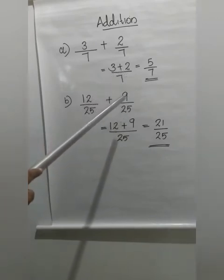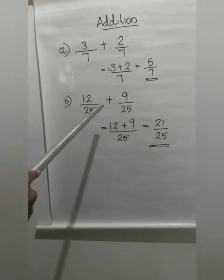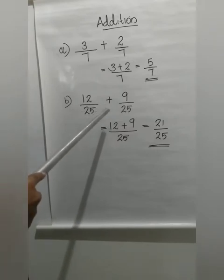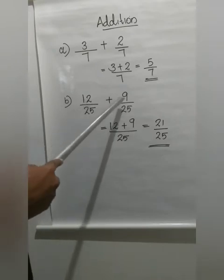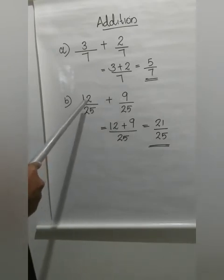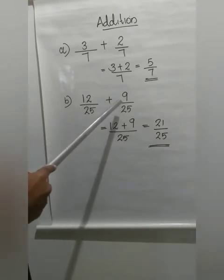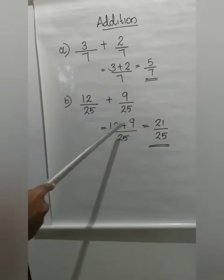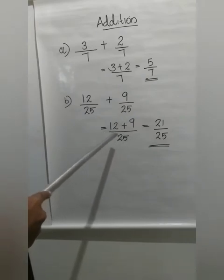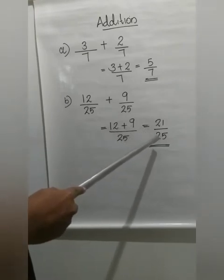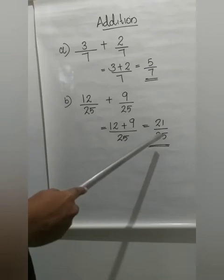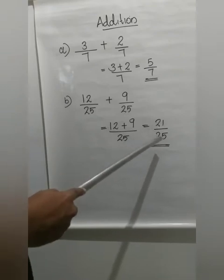One more example: 12 by 25 plus 9 by 25. Here also it is a like fraction, so we can add it directly. We will add only the numerators. What are the numerators here? 12 and 9. So 12 plus 9, and denominator remains the same. What is 12 plus 9? 21. Denominator 25. So the fraction is 21 by 25.